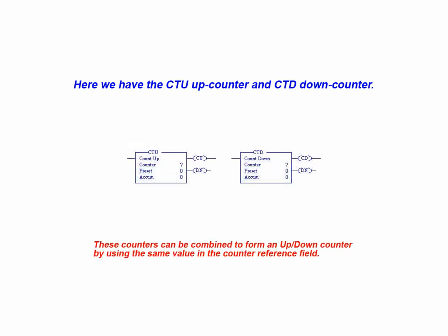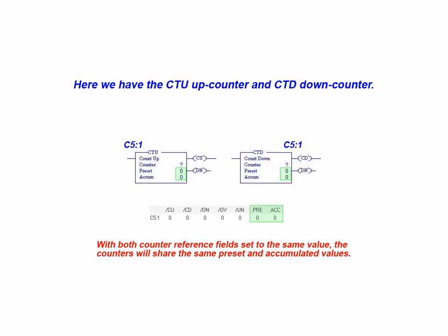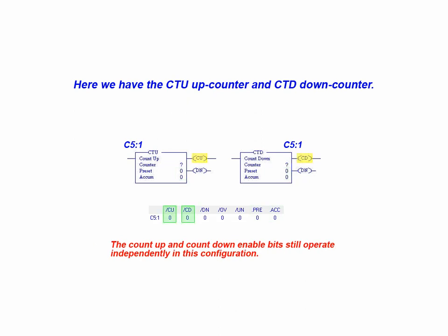These counters can be combined to form an up-down counter by using the same value in the counter reference field. With both counter reference fields set to the same value, the counters will share the same preset and accumulated values. The count up and count down enable bits still operate independently in this configuration.